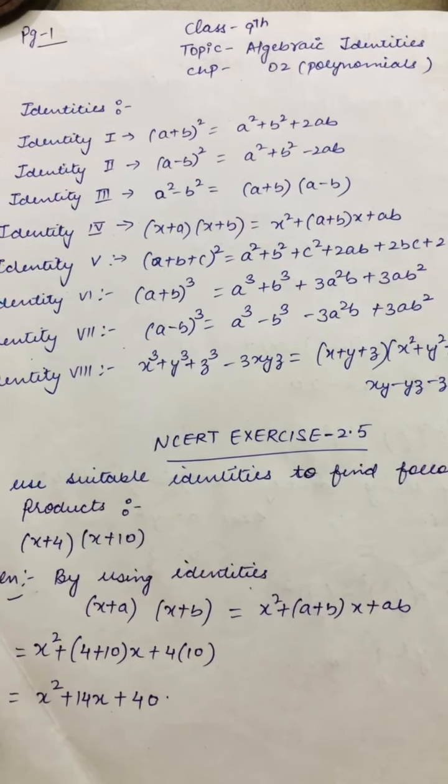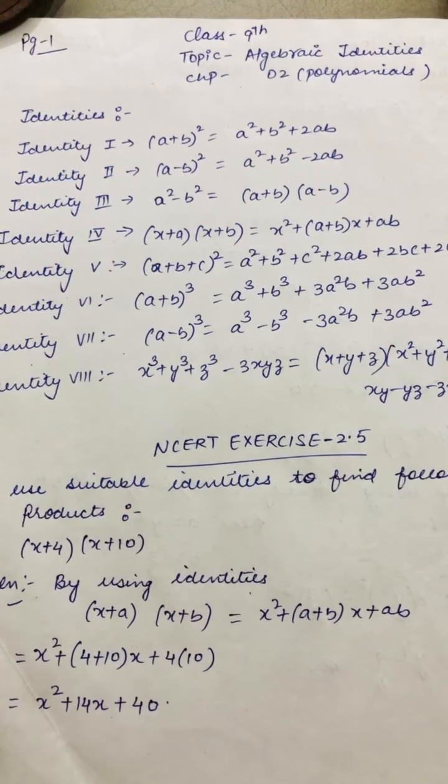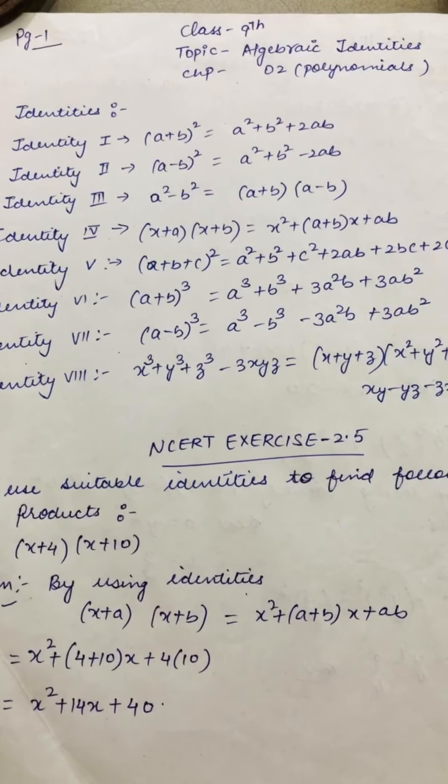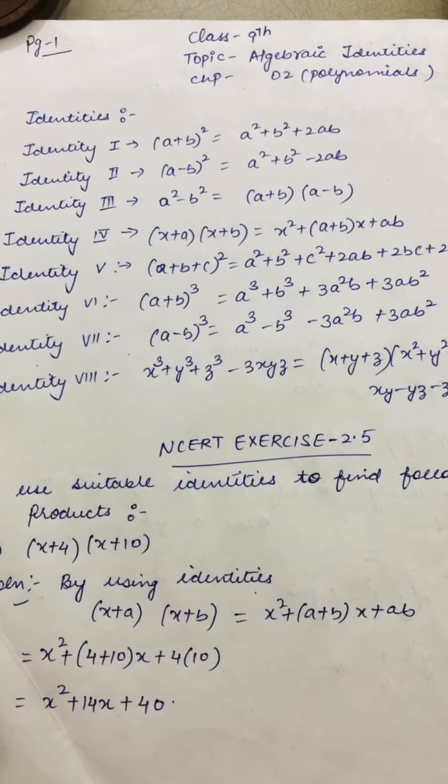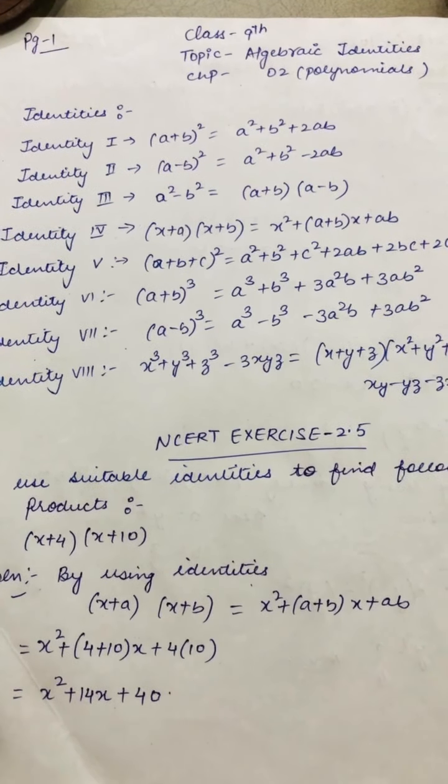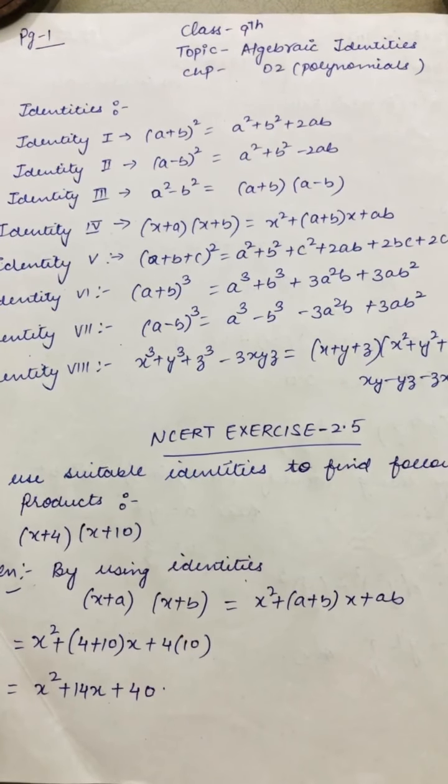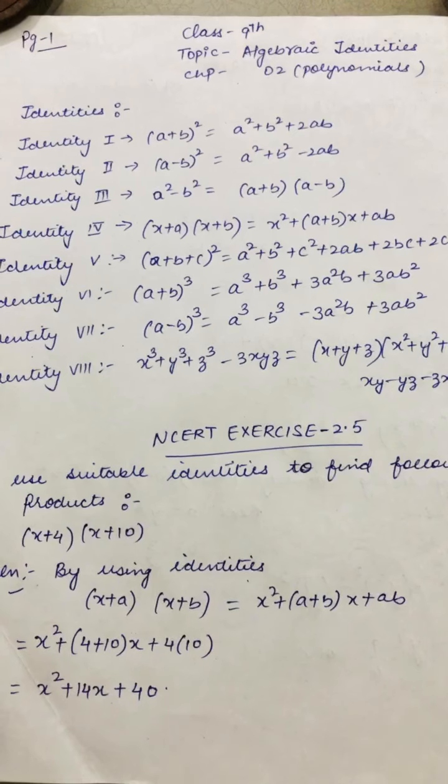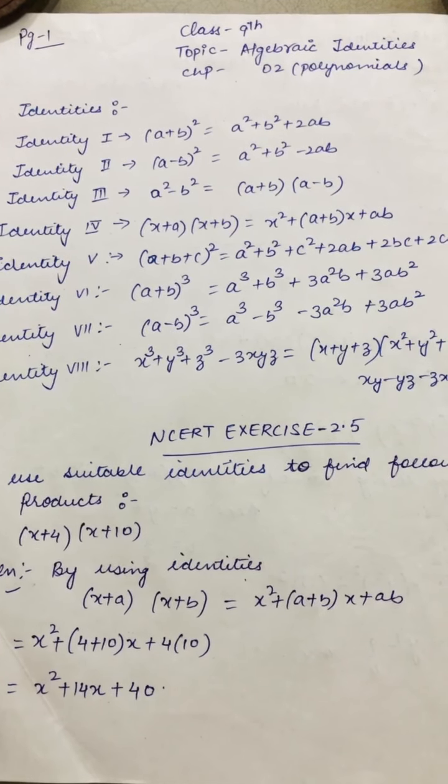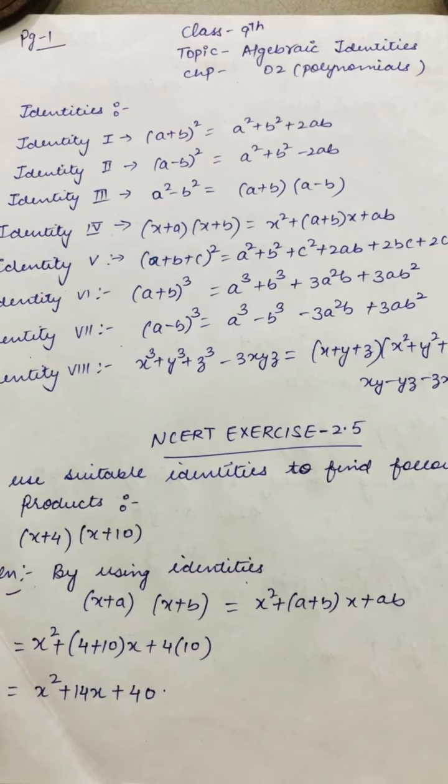The very first identity: (a+b)² = a² + b² + 2ab. Second identity: (a-b)² = a² + b² - 2ab. Third identity: a² - b² = (a+b)(a-b).